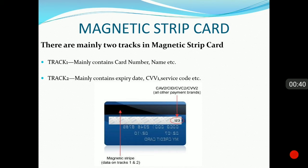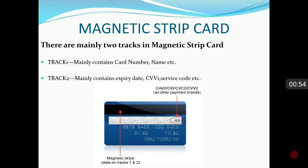Track 2 contains mainly the expiry date, the CV1, the service code, and many more details for the cardholder. The three-digit number I am pointing to is CVV2 or CVC2, which is used in card-not-present, e-commerce, or online transactions.